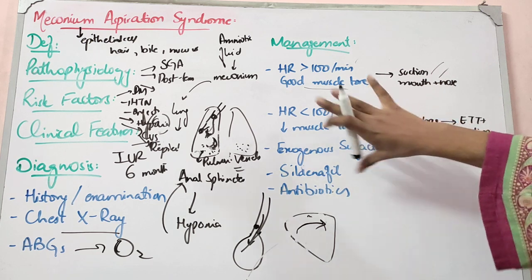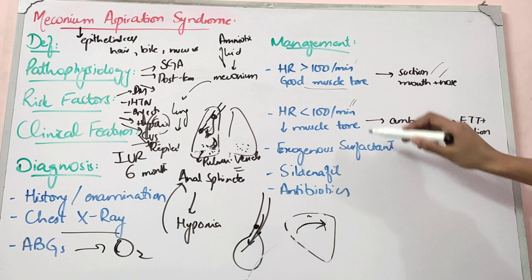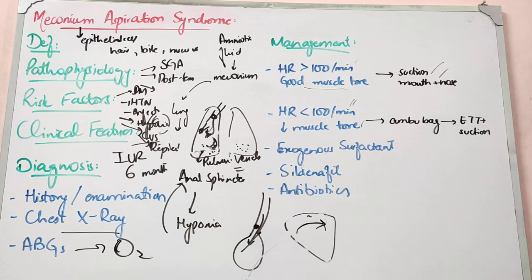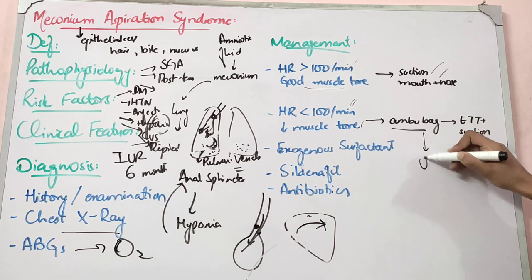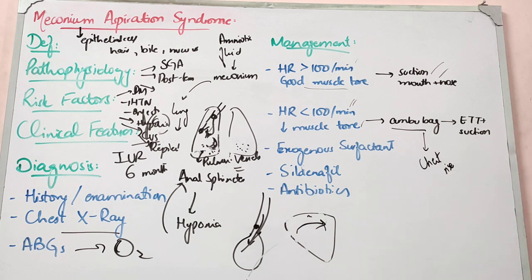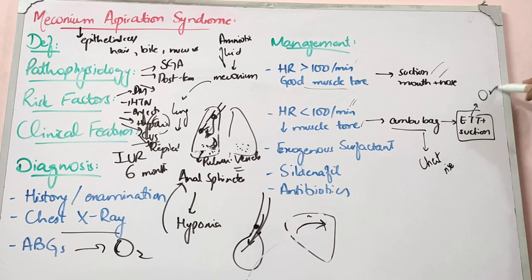However, if the child's heart rate is less than 100 and muscle tone is decreased, look for signs of distress such as nasal flaring and subcostal retractions. You need to provide bag-mask ventilation with oxygen. If the chest does not rise symmetrically, it indicates obstruction from thick aspirated meconium, and you must pass an endotracheal tube to clear the airway and provide proper oxygenation.